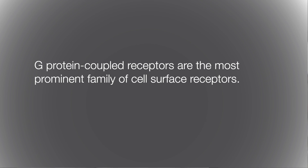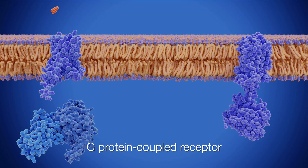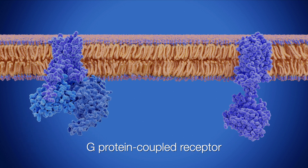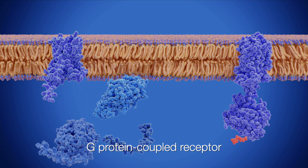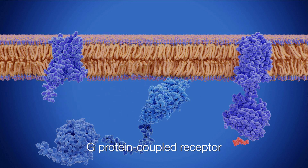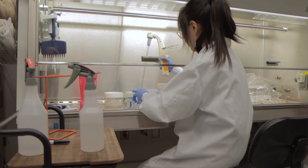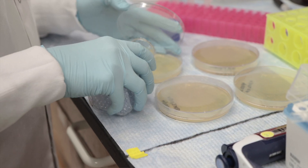GPCRs are involved in almost all nodes of communication with cellular processes. In humans there are 800 different GPCRs. They receive the signal from the cellular environment and then initiate a series of downstream signaling pathways. We are interacting with the G-proteins and they all have a unique structure.